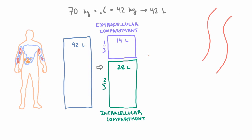It turns out that about a quarter of the extracellular fluid is inside the blood vessels, and that would be about 3.5 liters. The other three quarters is outside of blood vessels, and that would be 10.5 liters.